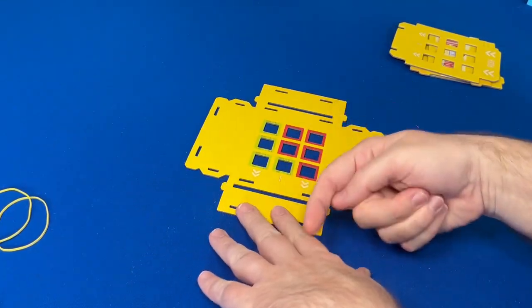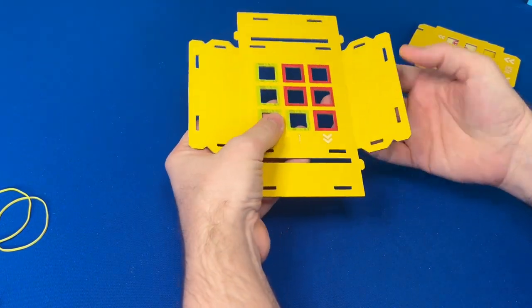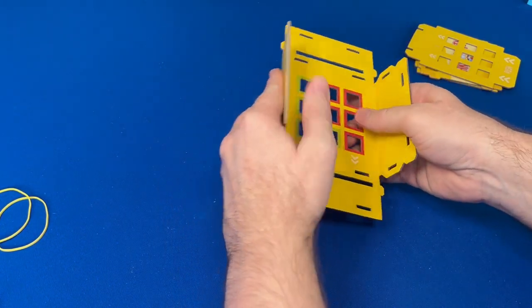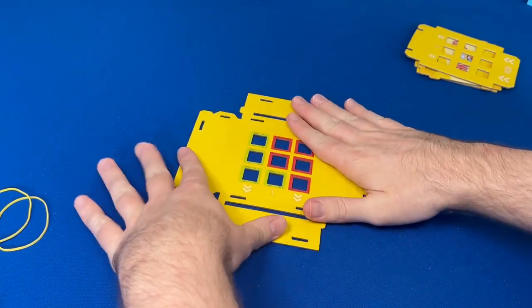To start, place the large base piece, numbered one, on the table and face the arrows to your left. Next, fold the four sides up at the hinged cuts carefully to pre-bend them. Lay the base back on the table and flatten it out a little bit.